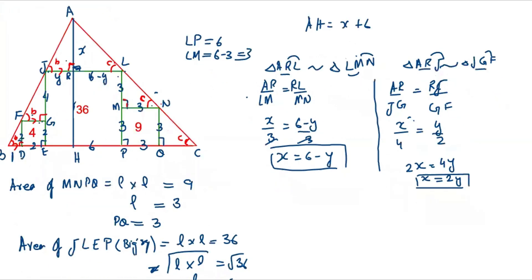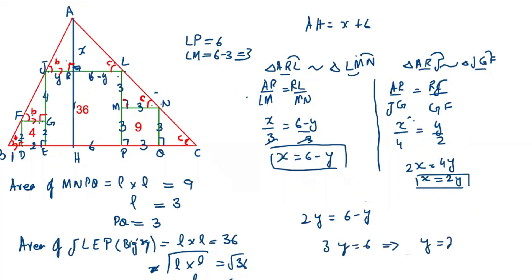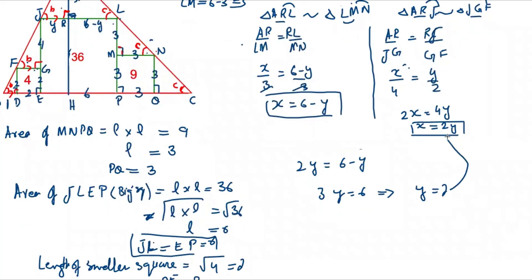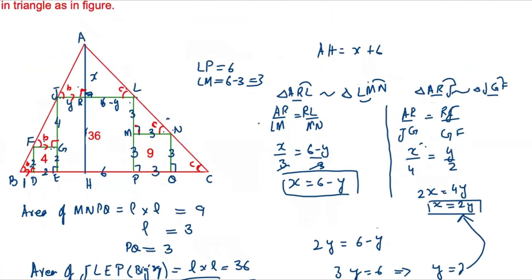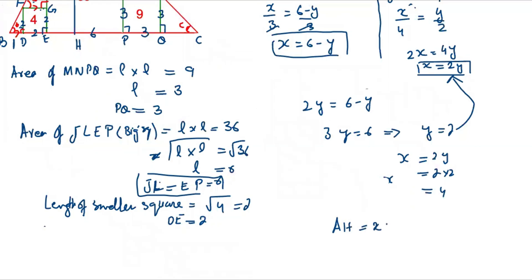We now have two equations: x equals 2y and x equals 6 minus y. Substituting: 2y equals 6 minus y, giving 3y equals 6, so y equals 2. Substituting back: x equals 2 times 2 equals 4. Therefore the length AH equals x plus 6 equals 4 plus 6 equals 10.